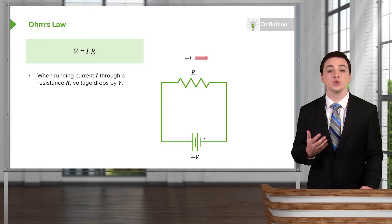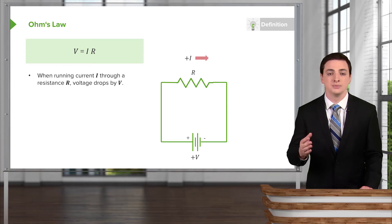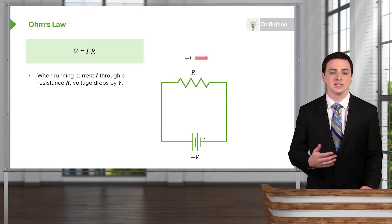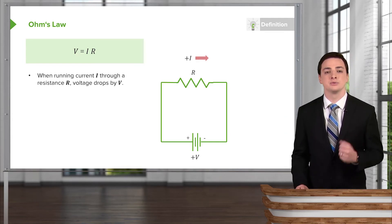That quantity by which we drop the voltage as we go from one side of the resistor to the other is equal to the current going through the resistor times the resistance of the resistor. So this is Ohm's law: the voltage dropped is equal to the current times the resistance.